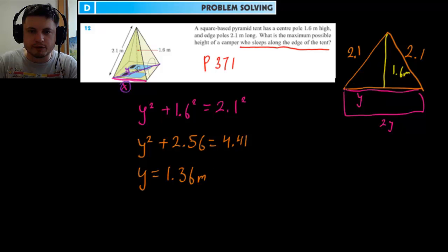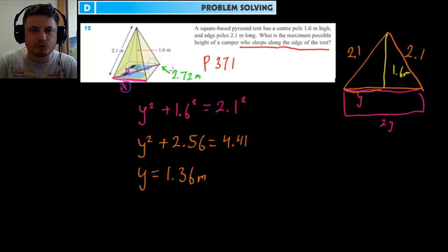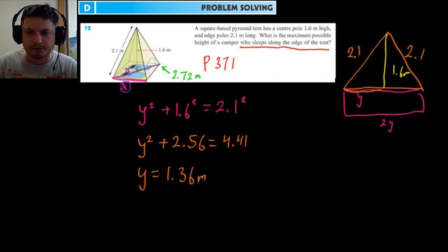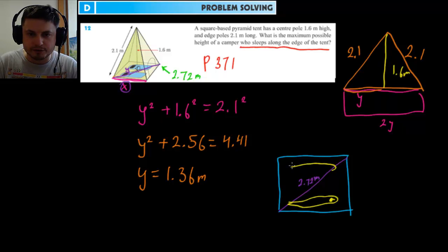That small part is 1.36 m, so the entire diagonal line is double that: 2y = 2.72 meters. Step two: now we look at the tent from the top. We see a square with this diagonal of 2.72 meters running through it — this is where the sleeping bags are placed, going all the way to the edges.